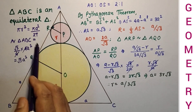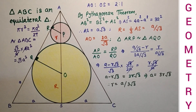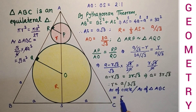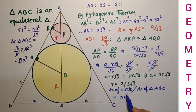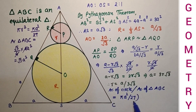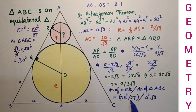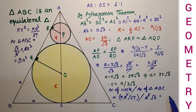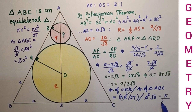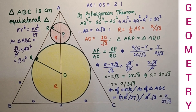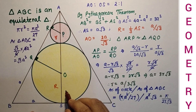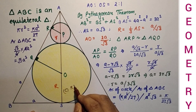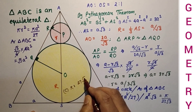The ratio between the area of the smaller circle and the area of the triangle equals pi A squared upon 27 divided by root 3 A squared. Cancelling A squared, and bringing root 3 to the denominator, the ratio equals pi upon 27 root 3. So the correct option is C: pi to 27 root 3.